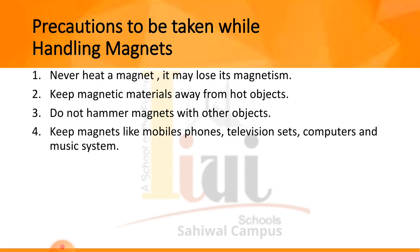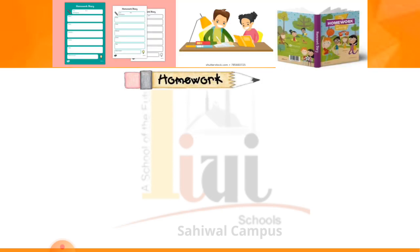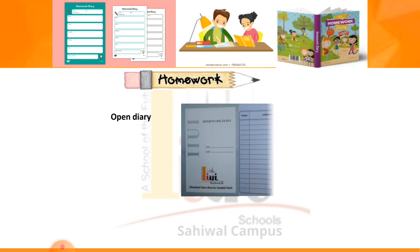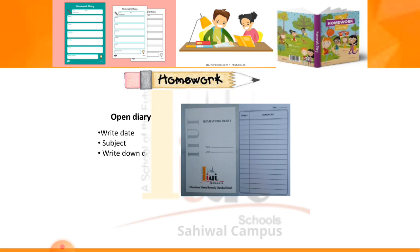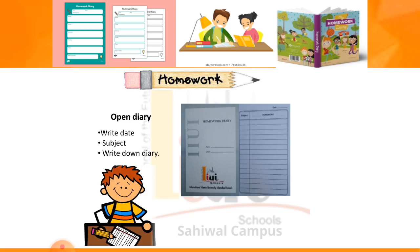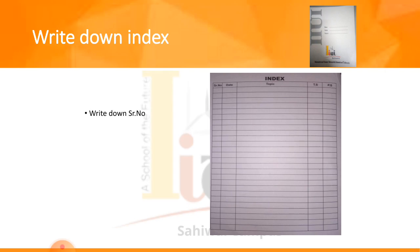Now you have some homework. Open your diary in the homework notebook, write the date, subject, and your diary entry. Before you do homework, write your index with the serial number, date, and then the topic: Fun with Magnets. After that, start your homework.